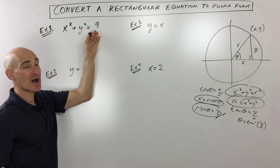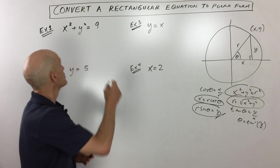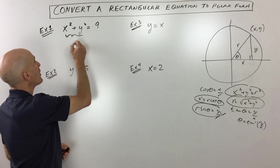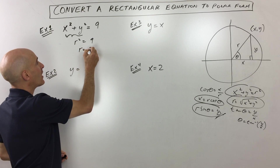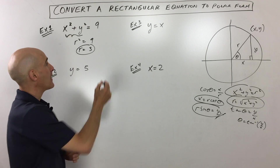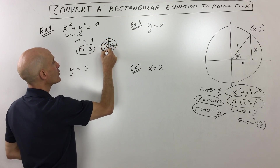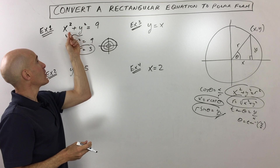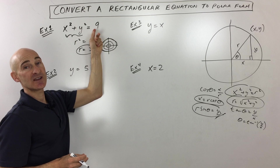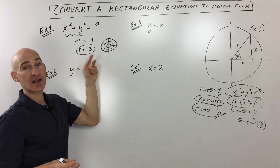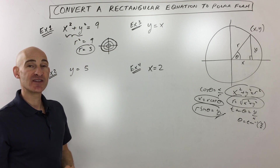Example one: we have x squared plus y squared equals nine. Using the equation x squared plus y squared equals r squared, we replace x squared plus y squared with r squared. So r squared equals nine, and taking the square root of both sides, r equals three. This makes sense because in polar form, a circle with radius three is represented simply as r equals three — a much simpler way of writing it compared to rectangular form.